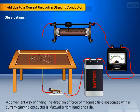A convenient way of finding the direction of force of magnetic field associated with the current carrying conductor is Maxwell's right hand grip rule.